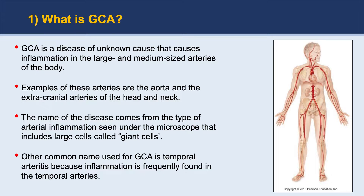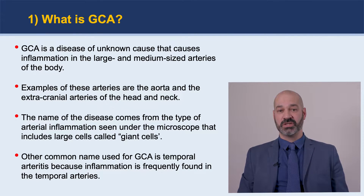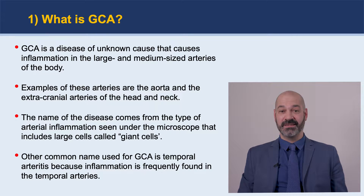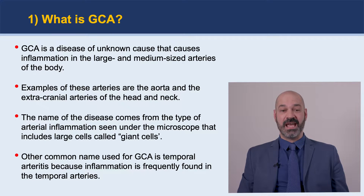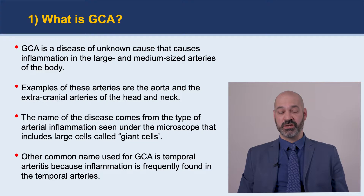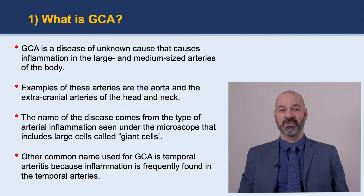So what is GCA? GCA is a disease of unknown cause that causes inflammation in the largest arteries of the body. Examples of those arteries are the aorta, which is the largest artery that goes through the chest and the abdomen, and branches of the aorta. Classically, the disease tends to cause inflammation in the extracranial branches of the head and neck arteries. The name comes from specific cells seen when one examines biopsies of these arteries under the microscope. Within these inflammatory infiltrates, some cells are very big, and that's why they're called giant cells — and therefore the name Giant Cell Arteritis.